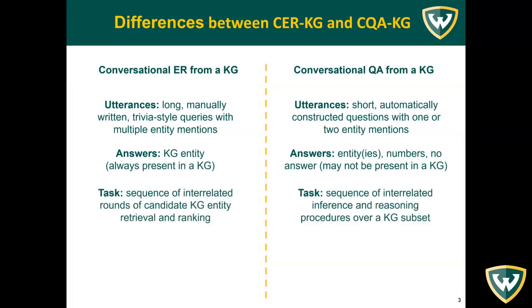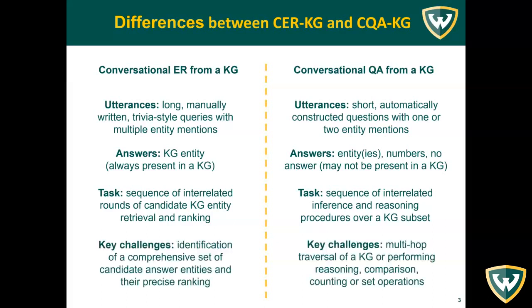The task of CER-KG can be viewed as a sequence of interrelated rounds of candidate knowledge graph entity retrieval and ranking. The task of CQA-KG can be viewed as a sequence of interrelated inference and reasoning procedures over a subset of a knowledge graph. Consequently, these two tasks present orthogonal challenges for researchers.